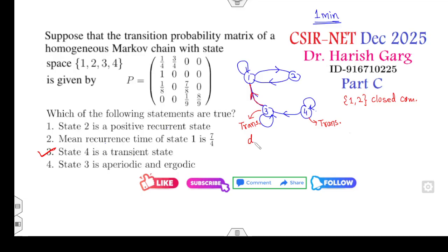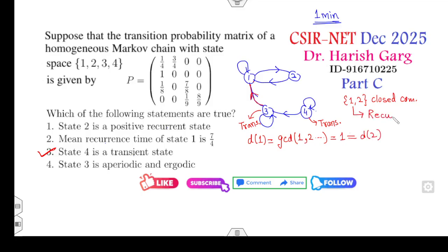Now look at the period of state 1. The GCD of the return cycle lengths is 1 — there is a self-loop at state 1 and also the cycle 1→2→1. The GCD is 1 for both states 1 and 2 since they belong to the same closed communicating class. Therefore states 1 and 2 are aperiodic and recurrent.